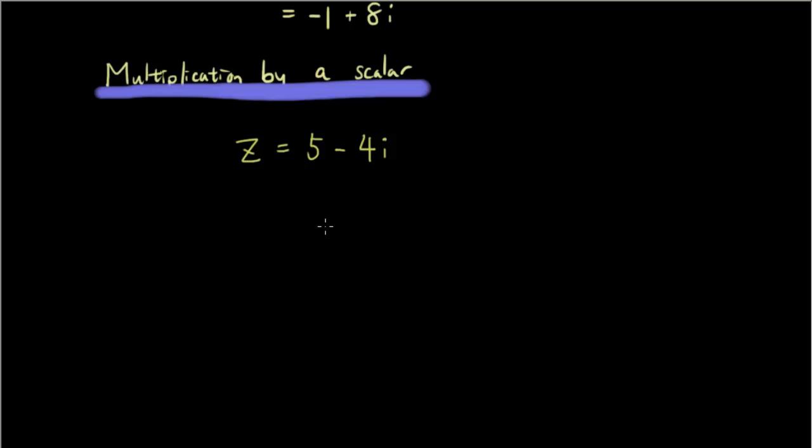Okay, so multiplication by a scalar just means I'm going to multiply z by a constant, so let's multiply it by 5. So let's do 5z and we want to know what that equals. So obviously all you have to do is multiply this whole thing by 5, so 5 times (5 minus 4i), and then that will give you 25 minus 20i.